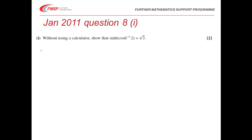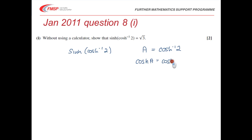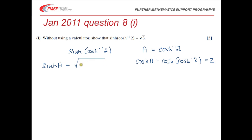For part 1, we've got to find sinh of inverse cosh of 2. It's easier if we let a equal inverse cosh of 2, which means cosh of a equals 2. We're going to use the relationship that sinh a equals root of (cosh squared a minus 1). Since cosh a equals 2, that's root of (2 squared minus 1), which is root 3.